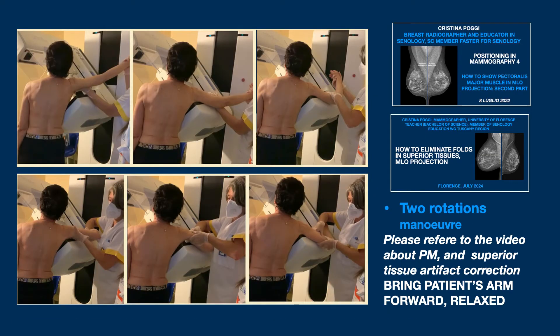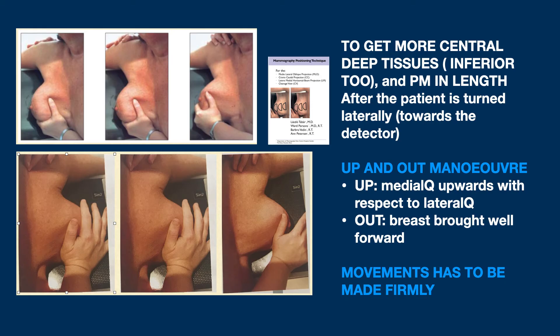We then move on to the two-rotations maneuver. The first consists of lifting the patient's arm, supinating her hand, and bringing her arm well forward. The second is a rotation directed superiorly and posteriorly, and again bringing her arm well forward, elbow flexed, and hand relaxed. Once the arm and shoulder are dealt with, the patient is turned laterally, and the up-and-out maneuver is properly implemented. All of these steps bring the medial deep tissues onto the detector, including a greater length of the pectoralis muscle.